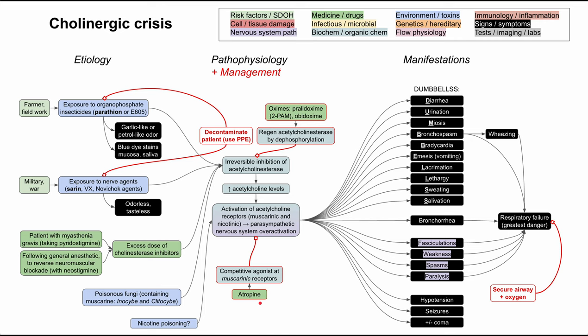You can also give benzodiazepines if the patient is having seizures induced by the cholinergic crisis. To summarize the order: airway, decontamination, atropine, then pralidoxime, with benzodiazepines for seizures as needed. I hope this review of cholinergic crisis was helpful — thank you for listening.